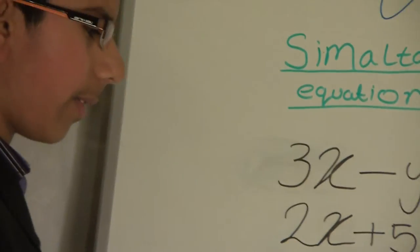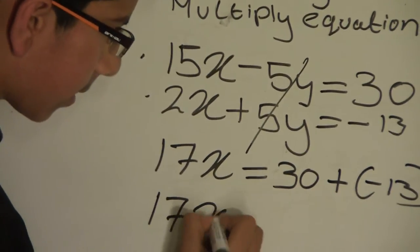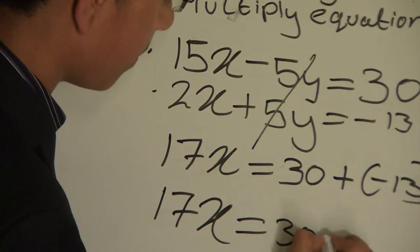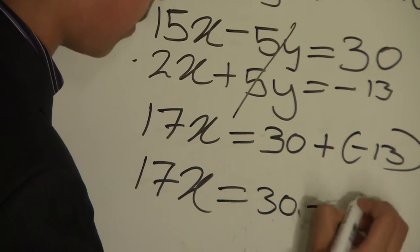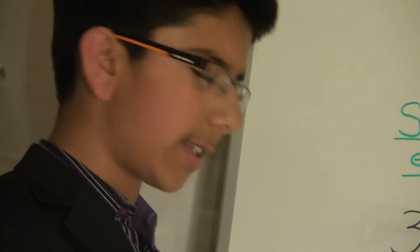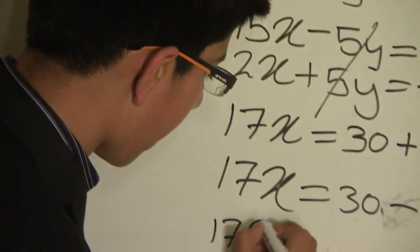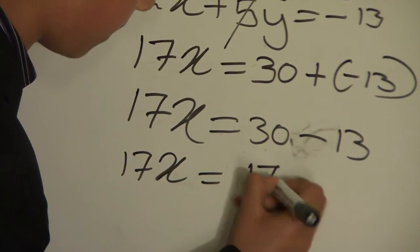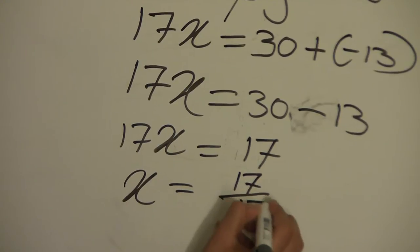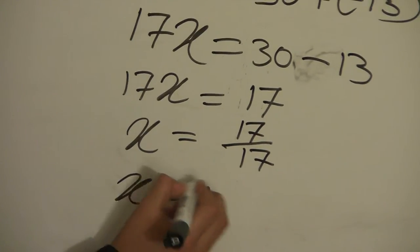So we will take out the plus and just write minus 13: 17x equals 30 minus 13. When we work out what 30 minus 13 is, it equals 17. So 17x equals 17, then we write x equals 17 over 17, and when we cancel them down it equals 1.